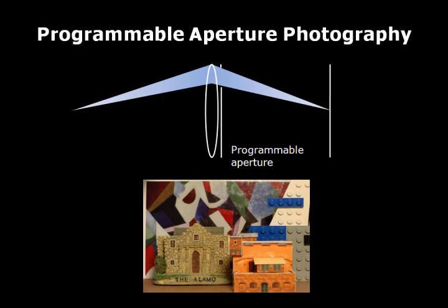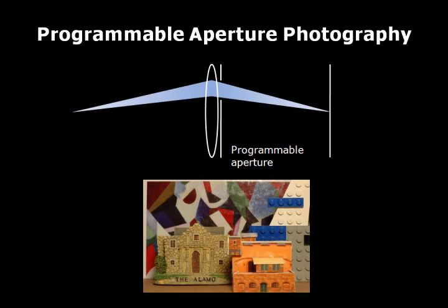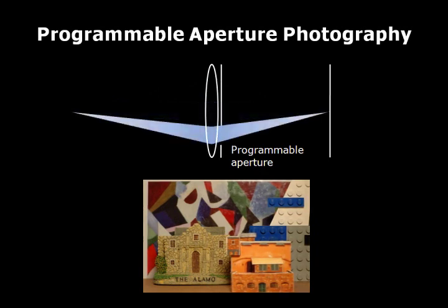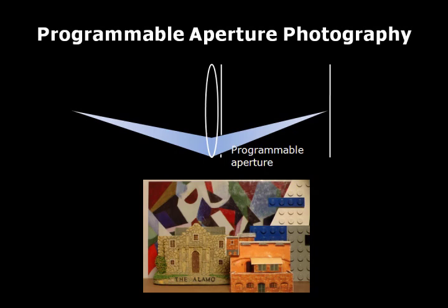Imagine that if the aperture of the camera becomes a controllable element where we can specify which region is to be opened during exposure. The resulting image will be a subset of the light field. In the next exposure, we change the shape of the aperture to open up another region, so that we can capture another subset of the light field. By sequentially changing the aperture shape, we can capture the light field and retain as high a spatial resolution as that of the normal image.